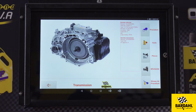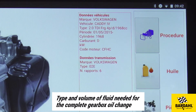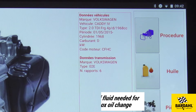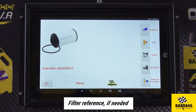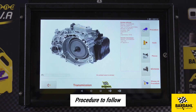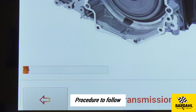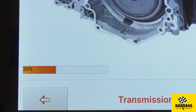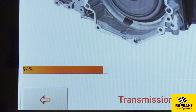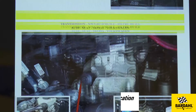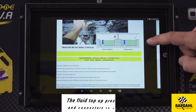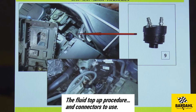You will find useful information on this screen: the type and total fluid capacity of the automatic gearbox, the fluid reference to use, the filter reference if needed, the procedure that you need to select to know where and how to connect the machine to the automatic gearbox, the fluid type and OE specification to follow as well as the fluid drain interval, the fluid topper procedure and which connectors to use.